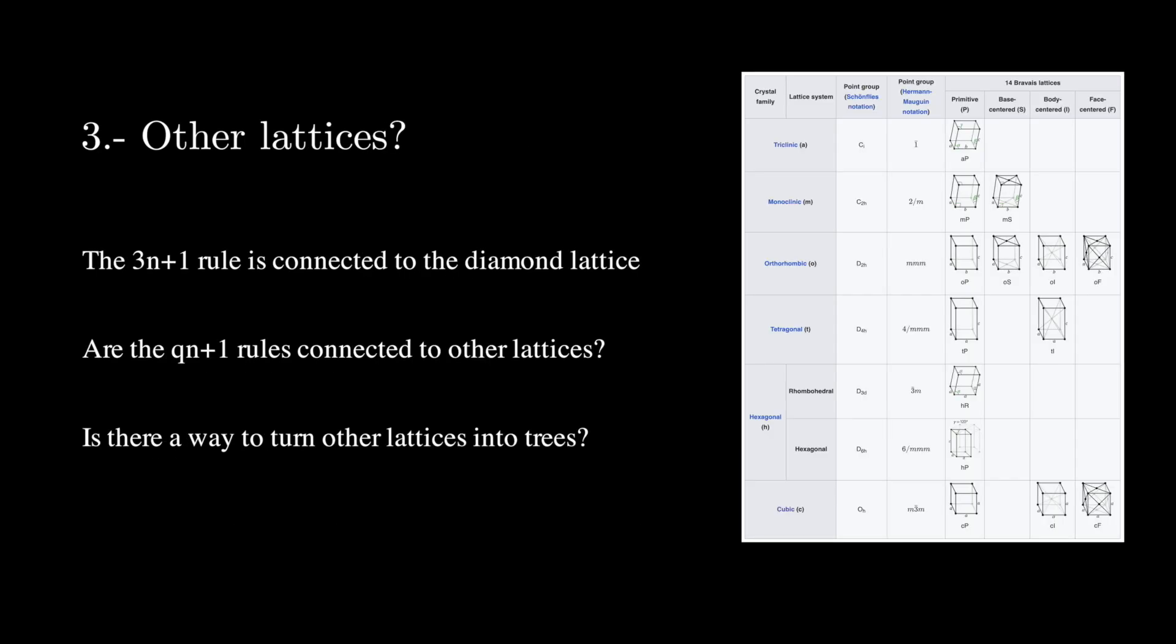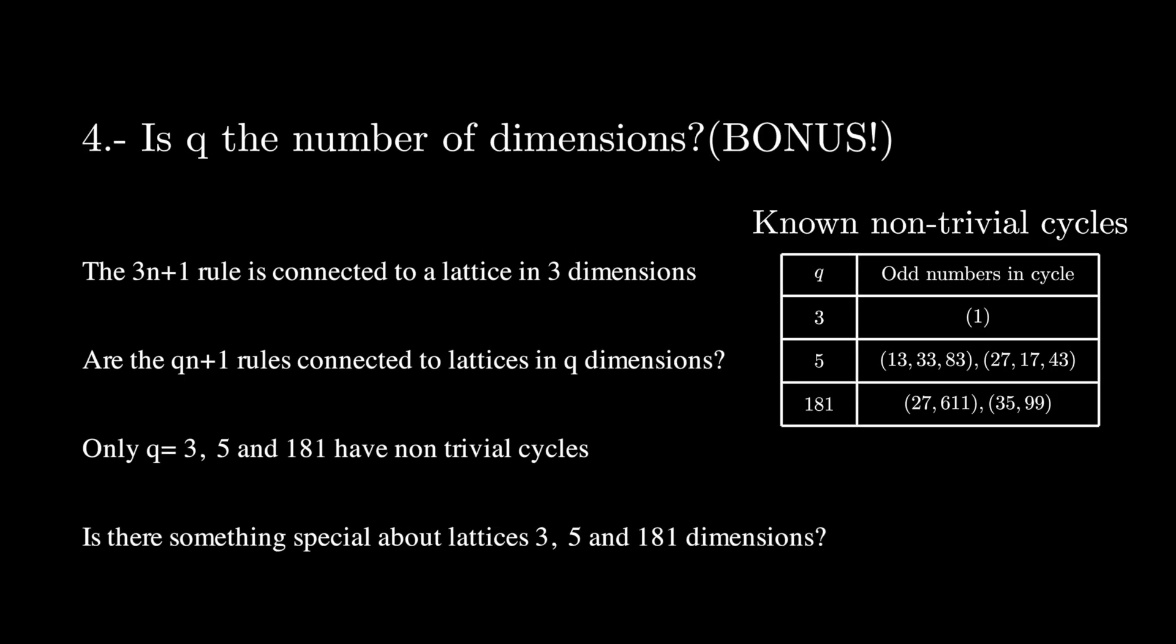The third one is, what about other lattices? The Collatz tree comes from the 3n plus 1 rule, but we can generalize it into qn plus 1 and make other trees. Are these other trees connected to other lattices? Alternatively, if you take any crystal lattice, is there a way to turn its coordinates into something like the Collatz tree?